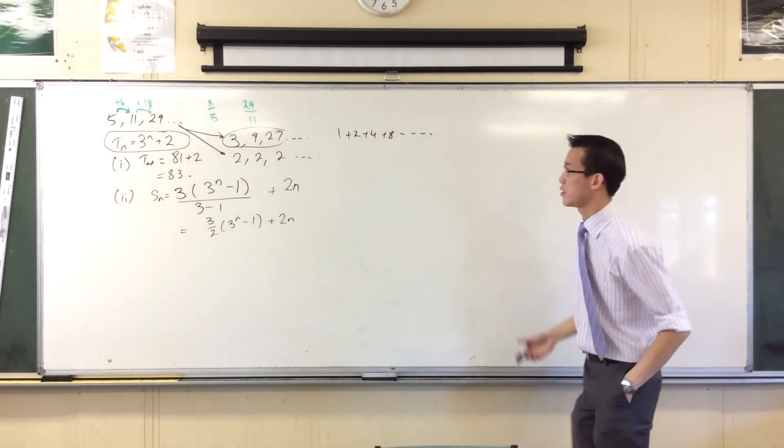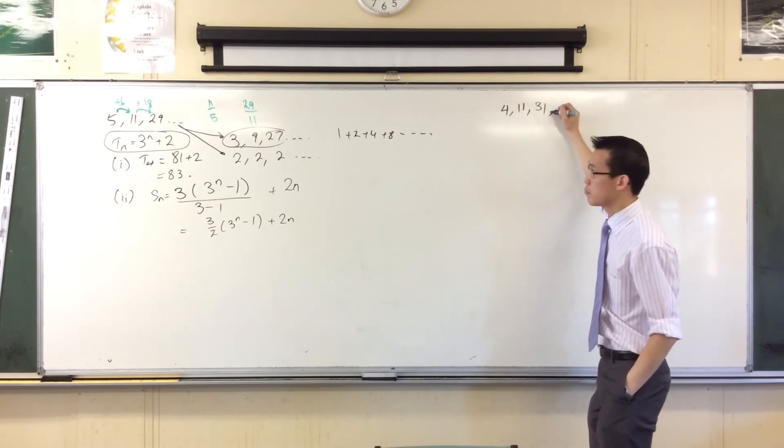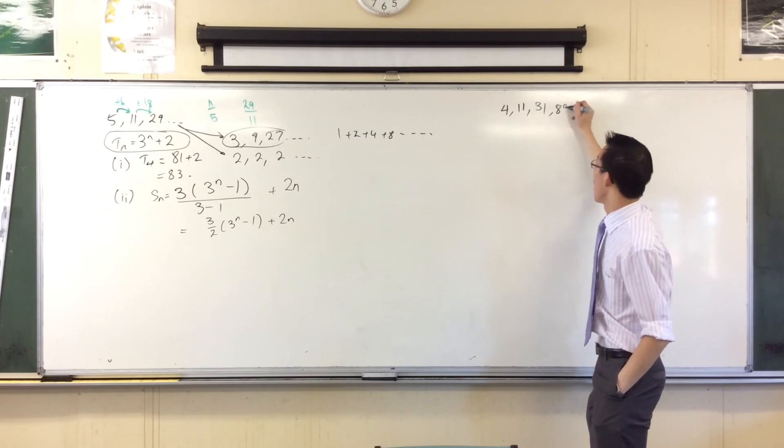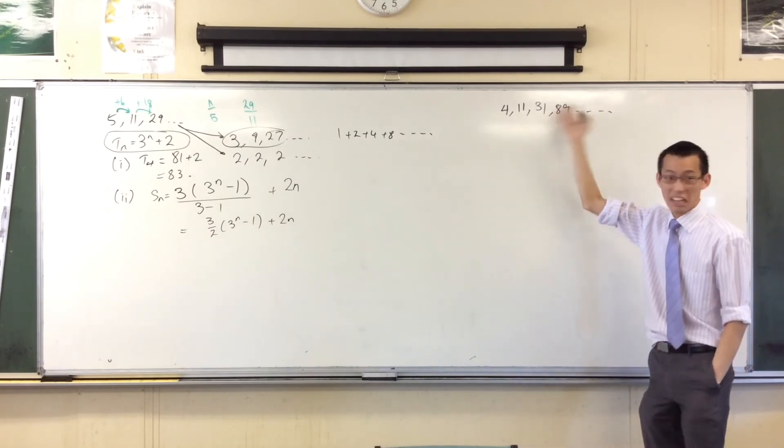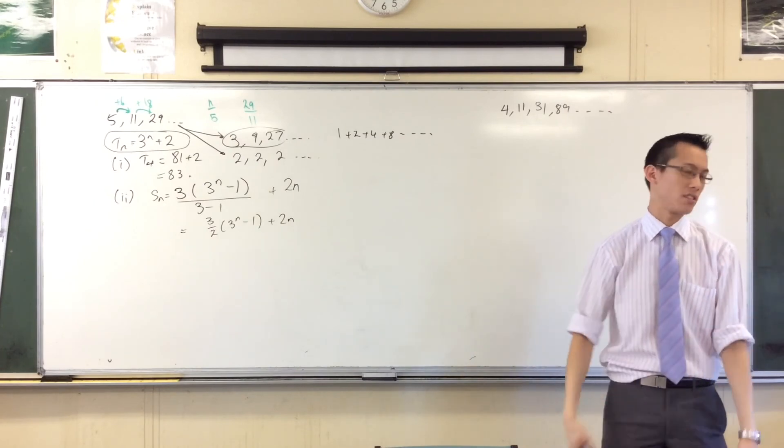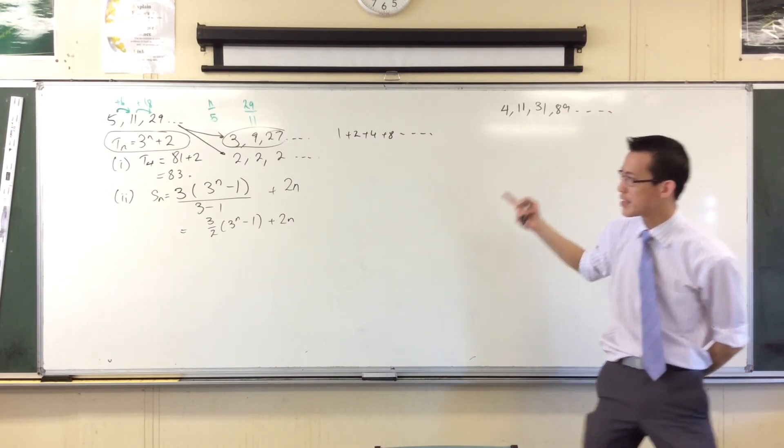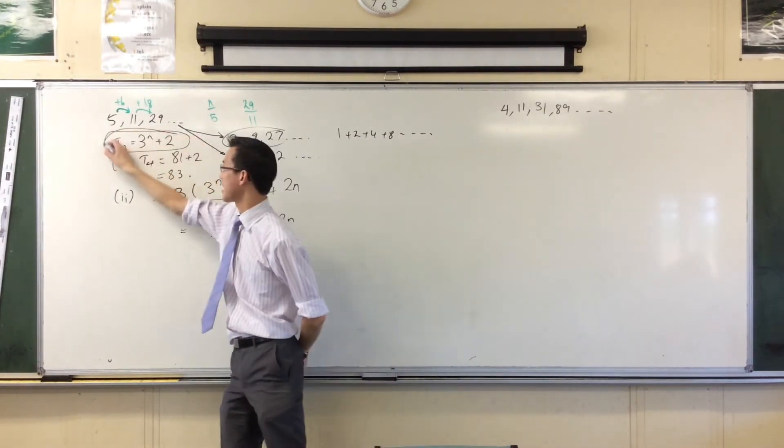So the resultant series would be 4, 11, 31, 89, dot dot dot. What's that? That's nothing. But if I break it apart, it's two very structured things that are easy to deal with. How would you figure that out? This one. Well, you see, they didn't expect you to figure it out. That's why they gave you the nth term.